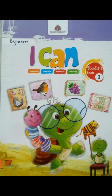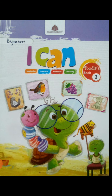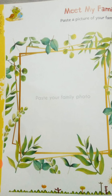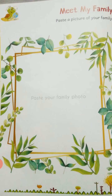Now, open your book, I Can Beginners, and go to page number 4. Here you can see we have blank space given where we have to paste the picture of our family. So, arrange a family picture and paste it here. After that, hold your book in your hand and introduce your family members one by one to any family member at your home. Okay, easy to do. So, paste the picture and start the work. Now, move to the next session.